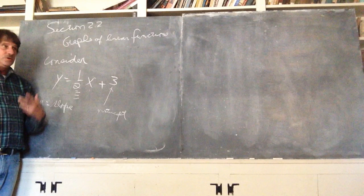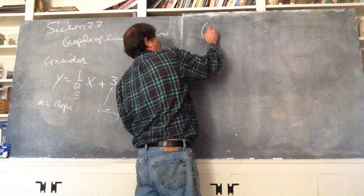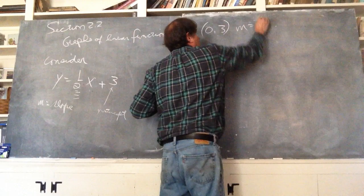We know that this is the y-intercept and we know that this is the slope. And so we want to graph it and you can do that with a point and a slope. The y-intercept is defined as the point where x is zero and y is three and we said the slope is a half.